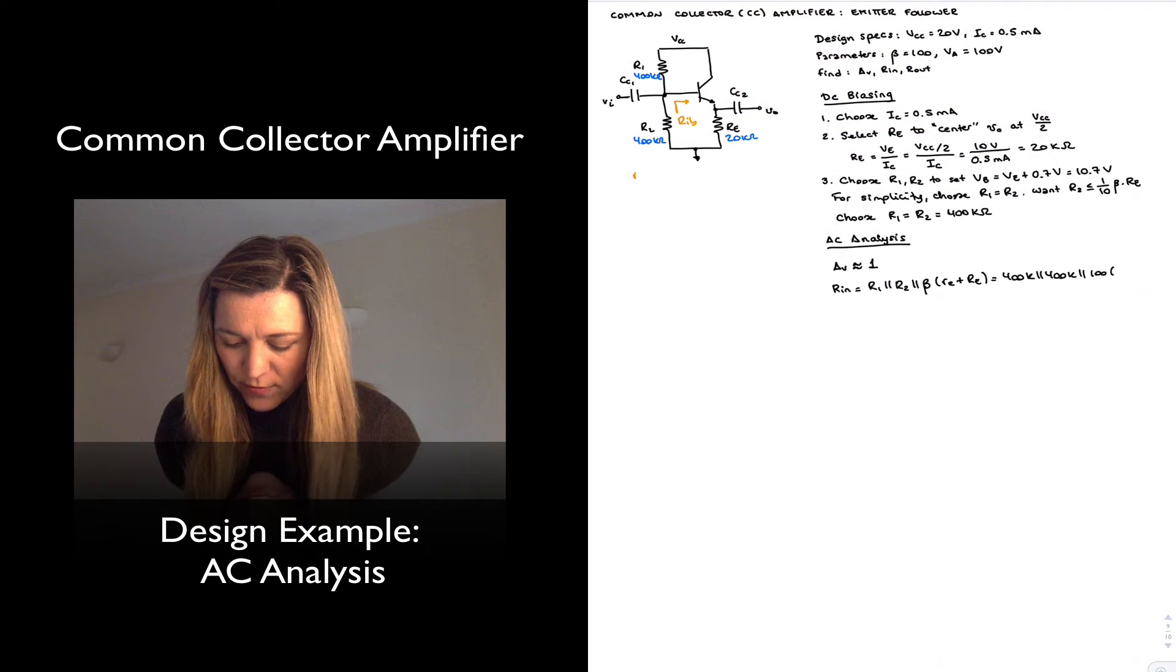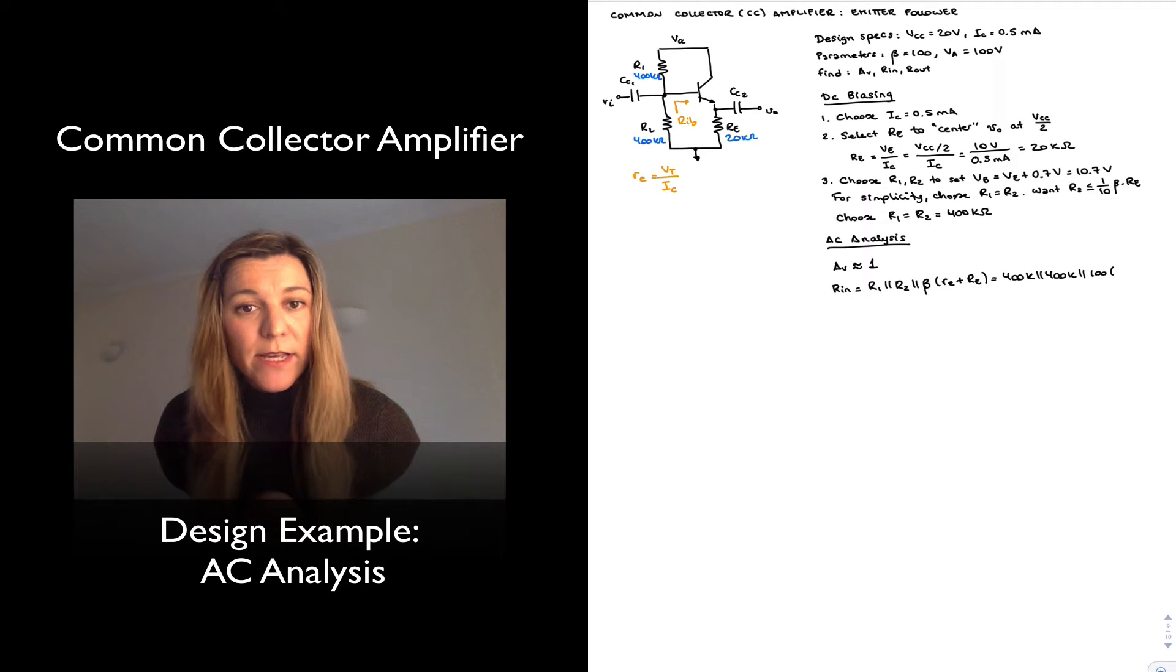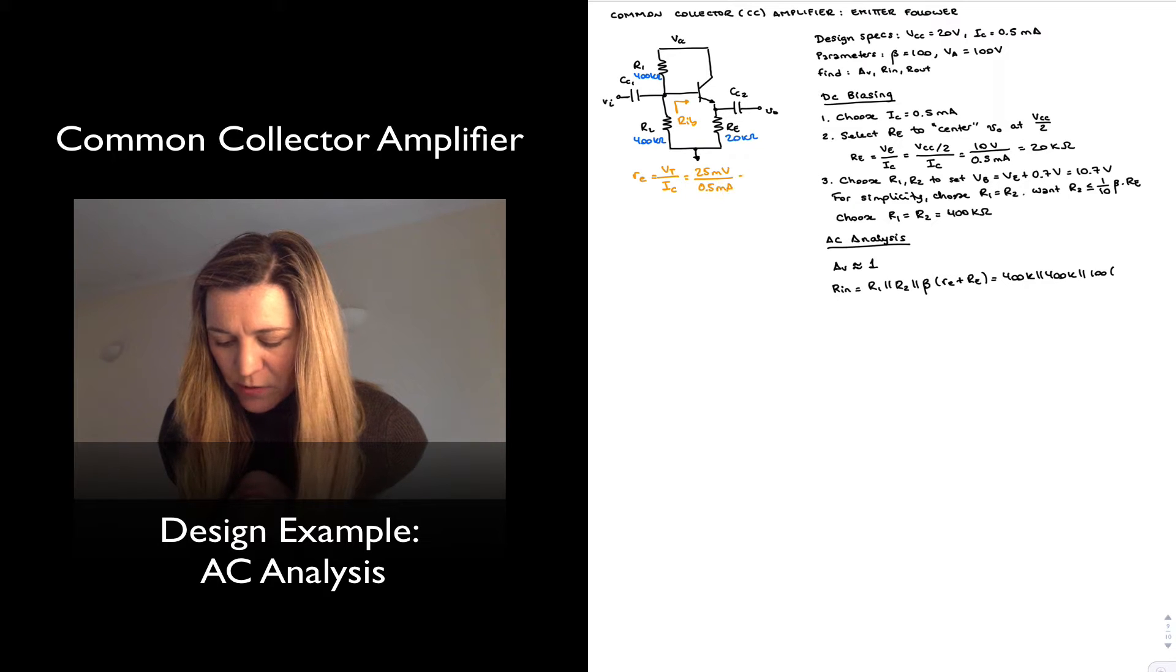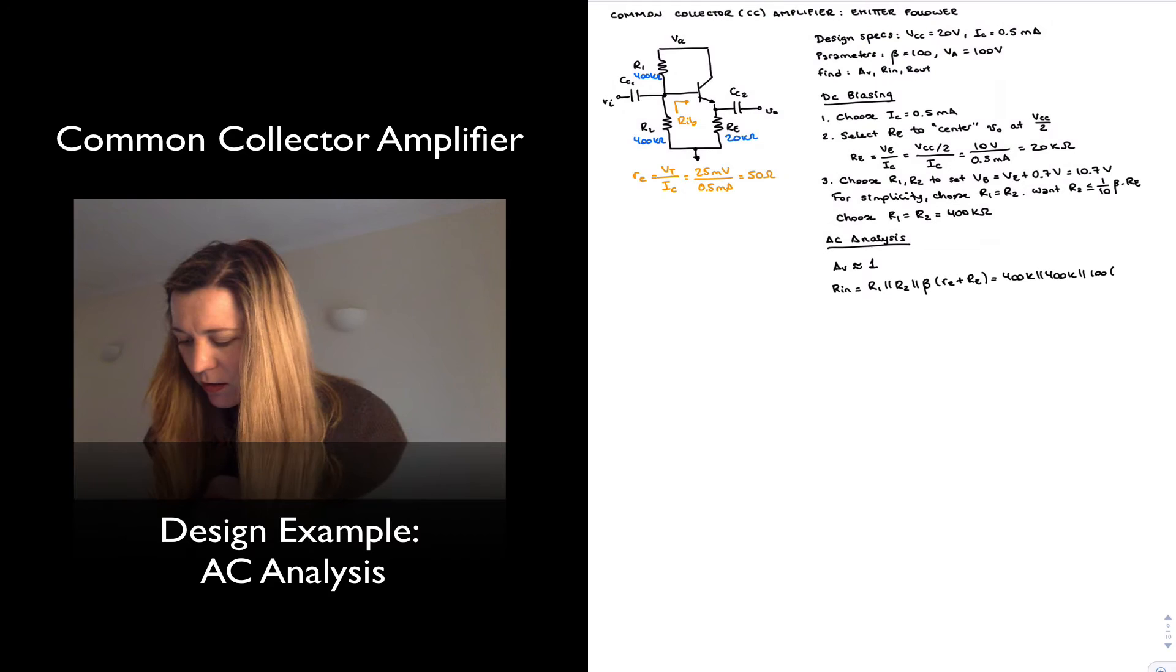I'm going to calculate it down here. It is equal to the thermal voltage divided by the quiescent collector current. Thermal voltage at room temperature is approximately 25 millivolts, IC is 0.5 milliamps, so that gives me an RE of 50 ohms. So 50 plus 20k.